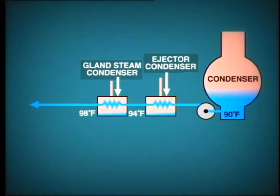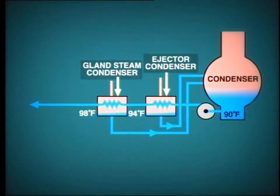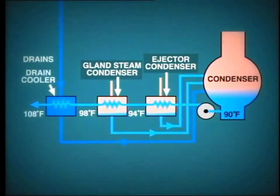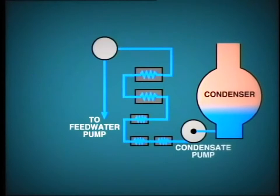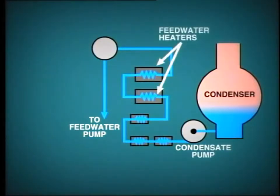The condensed steam is then routed back to the condenser hot well. A drain cooler is often located here and uses condensate to extract heat from water returning in the heater drains. The condensate then passes through several feedwater heaters where heat is added by extraction steam. In this particular scheme shown here, we have two closed-type heaters and one open heater where the extraction steam comes into contact with the condensate.